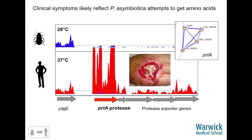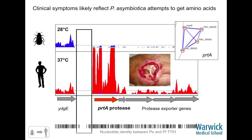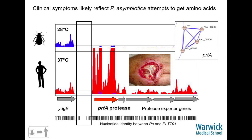We think this is quite important because the requirement for these amino acids at 37 degrees explains the clinical symptoms of ulcerating wounds eating away tissue. At mammalian temperatures, it needs to chew up the surrounding protein in the flesh simply to obtain amino acids to replicate. We think we're actually seeing a mechanistic explanation for the ulceration. And when you look at the promoter region of the protease between the human and insect pathogenic strains, there is a lot of divergence — so we can get to the molecular details of how it's evolving.